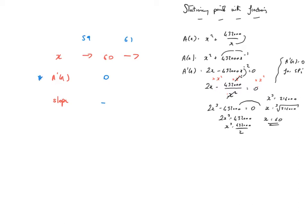The key thing here is I'm analyzing the differentiated function, so I would sub 59, 61 in the differentiated function. It would be easier to put it into this one with the positive power. A dashed 59 will be equal to 2 lots of 59 minus 432,000 over the 59 squared. That will give me minus 6.1 odds. The key thing is that is a negative result, which means slope's going down.